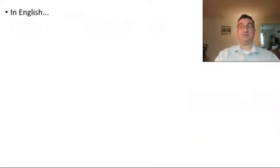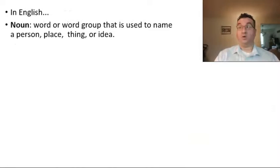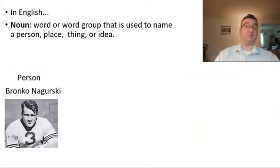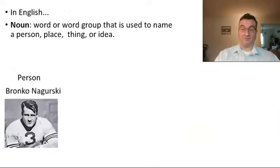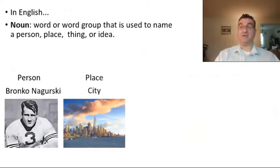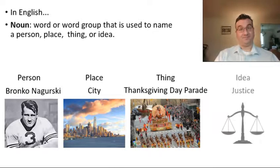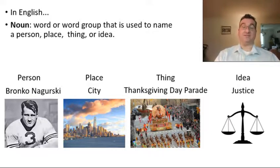In English, a noun is a word or a word group that is used to name a person, place, thing, or idea. For example, a person could be Bronko Nagurski, the football player from the 1930s. A place could be a city. A thing could be the Thanksgiving Day Parade. And an idea could be something like justice.